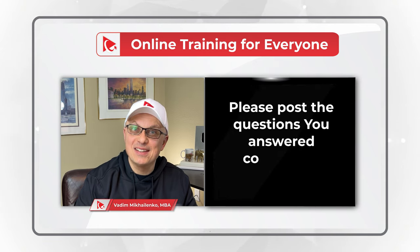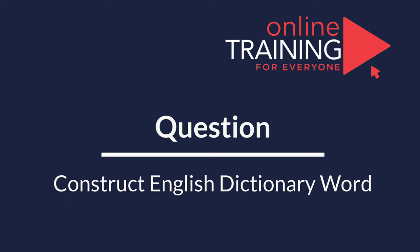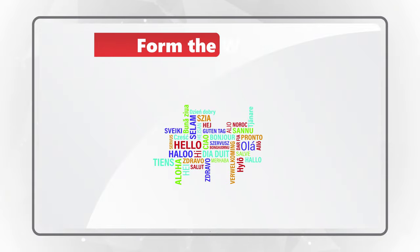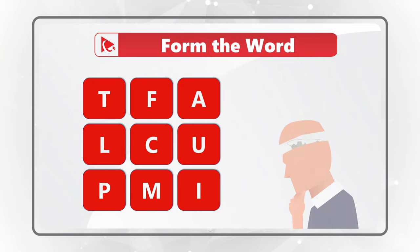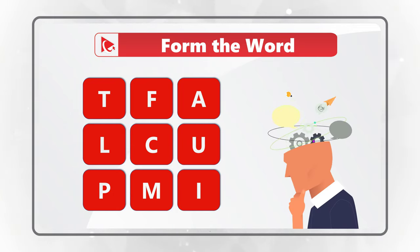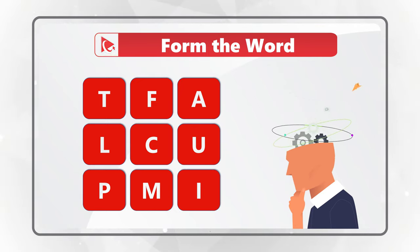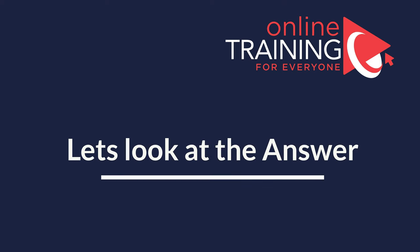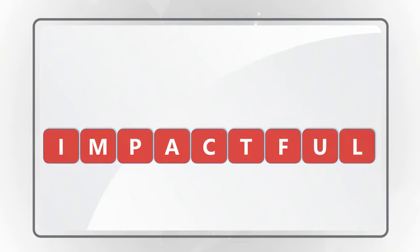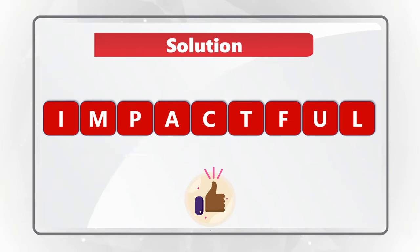This question truly tests your knowledge of the English dictionary. You need to form a word using all nine letters — T, F, A, L, C, U, P, M, I — each only once. It's a complex nine-letter word, so consider pausing the video. The correct word is 'impactful,' meaning having a major impact or effect. Sample usage: 'During her presentation she made impactful statements.'